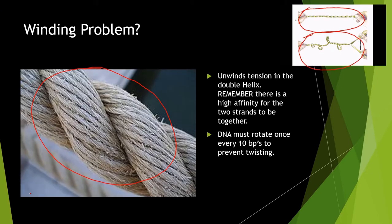This is a rope here, and it resembles the double helix. There's a lot of tension there. So what we have to do is unwind this DNA, and that's where topoisomerase comes in.